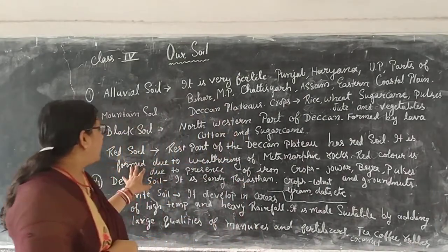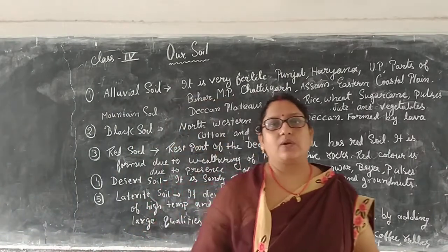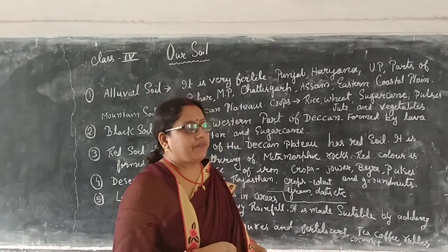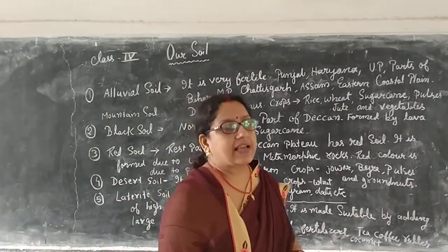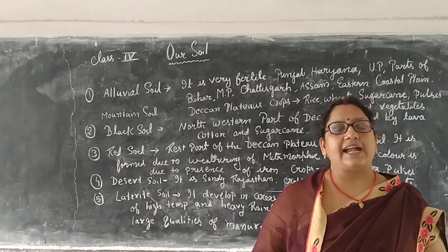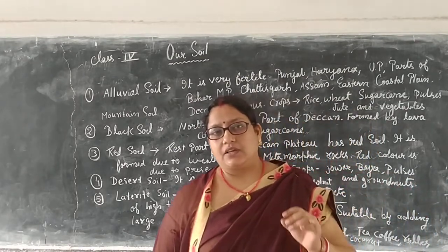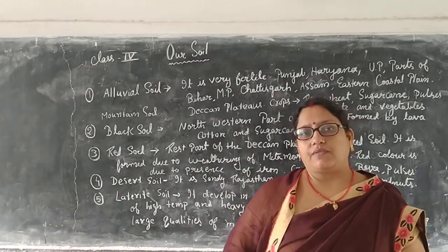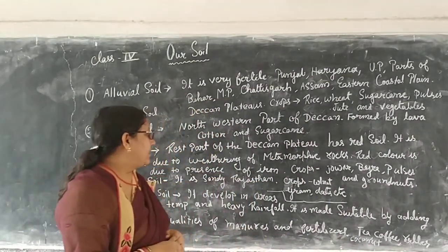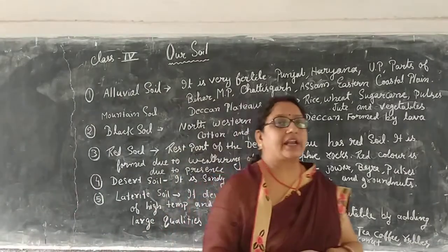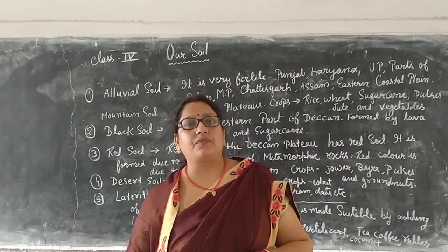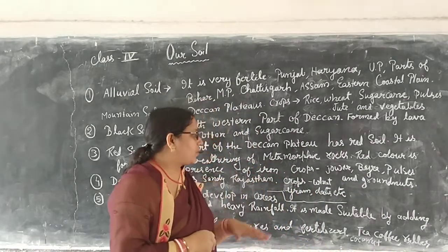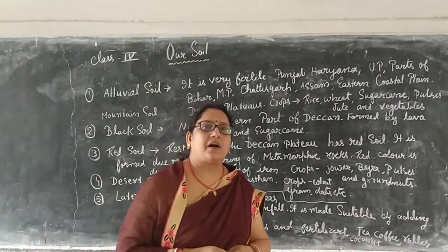The fifth type is desert soil. The desert is an area that does not receive heavy rain. We can take Rajasthan as an example — it has desert soil, which is sandy and full of sand. Sand dunes are formed in desert areas. The crops grown in desert soil are wheat, groundnuts, and dates. Dates are very good for health and are imported and exported from desert regions.